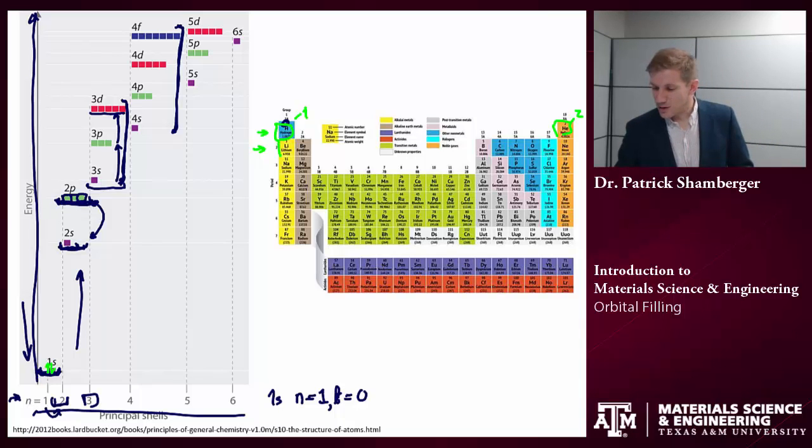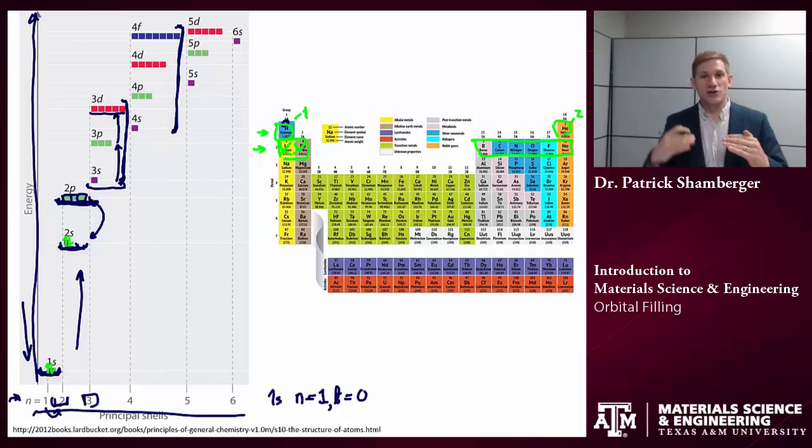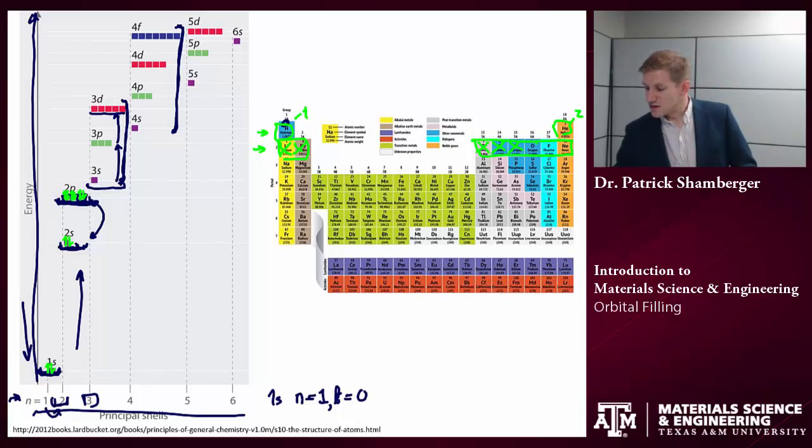As we go to the second row, first we're going to fill up the 2s electrons—that's filled by lithium and beryllium—and then we're going to start to fill up these 2p electrons. That's because the 2p orbital is at a little bit higher energy level than the 2s orbital. There are three potential orbitals, each of those can have two electrons, spin up and spin down, and so that gives us six electrons that we're able to put into the 2p orbitals.